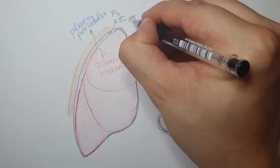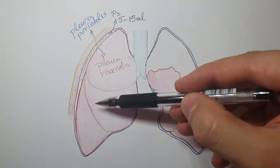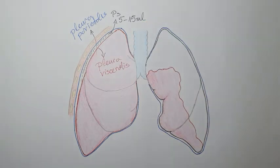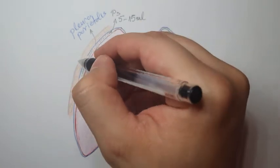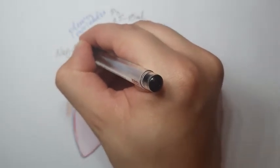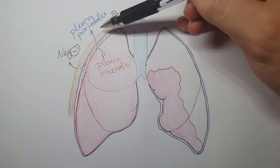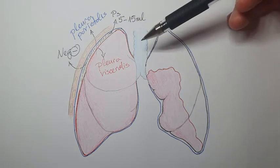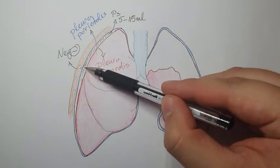In this pleural space there is a small amount of fluid — about 5 to 15 milliliters, roughly a teaspoon spread across the entire lung lining. This fluid is produced by the pleura parietalis and is continuously removed by lymphatic vessels. Importantly, there is negative pressure in this pleural space.